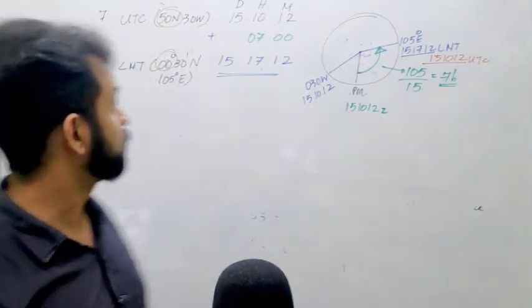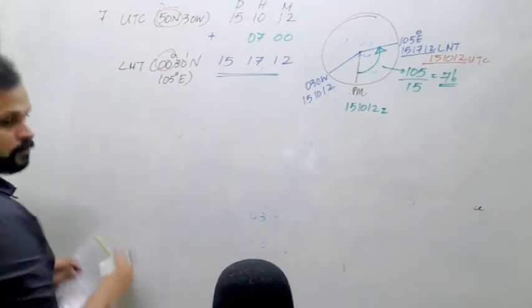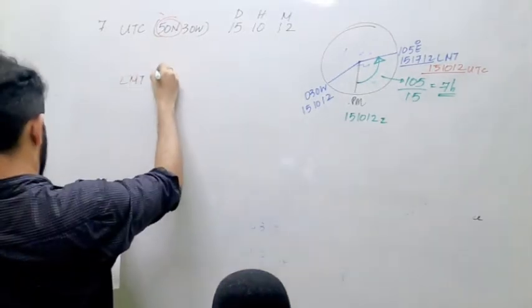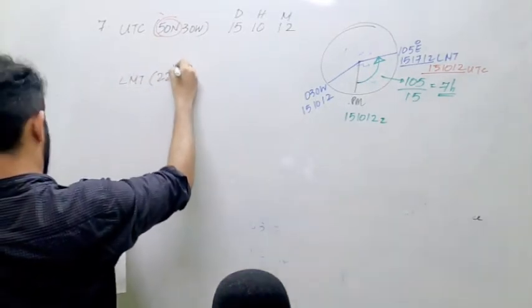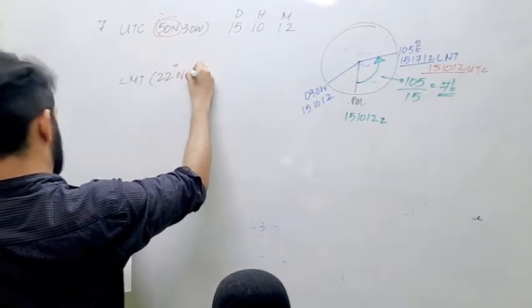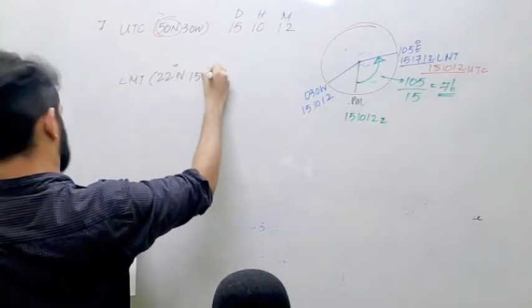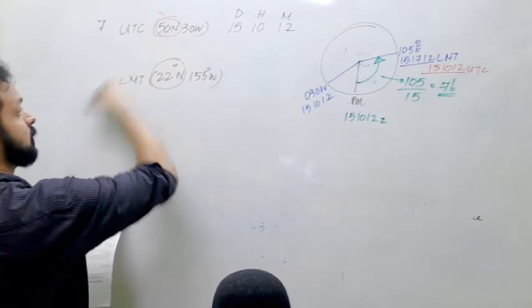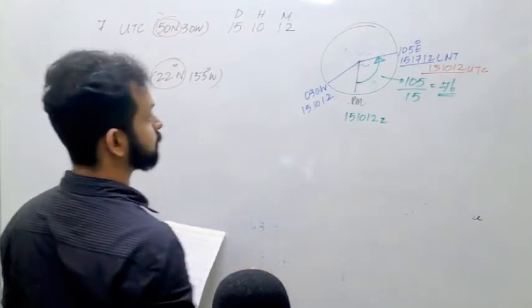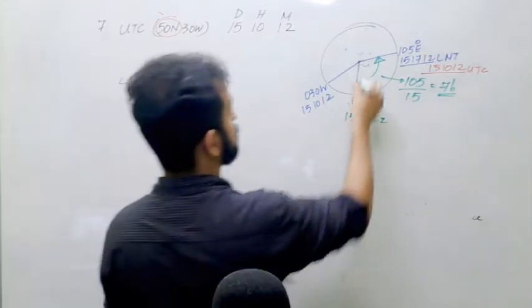What about the next one? 22 north, 155 degrees west. UTC at 22 degrees north and 155 west. Do you know this is not required here again? So what is the...